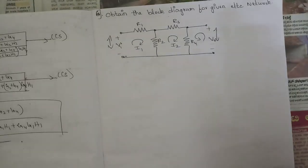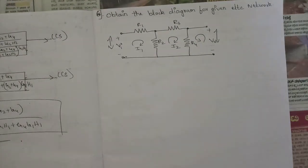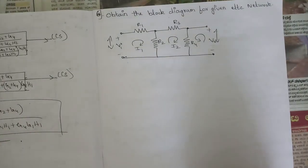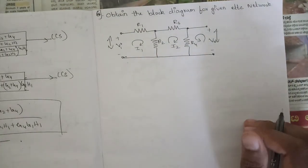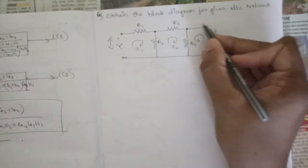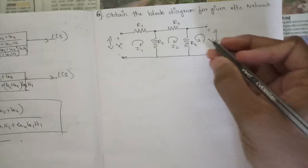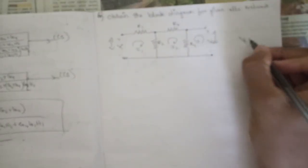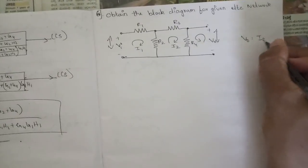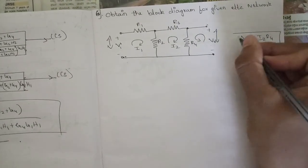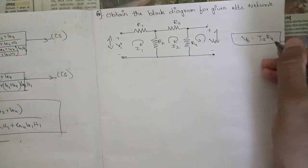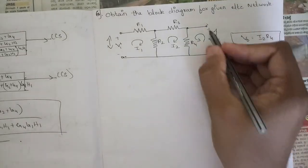As you have studied in network analysis, first we have these two loops. We need to write the KVL equations. In this outer loop, V_out is equal to I2·R4 — the current through R4 resistor is I2. Write that and keep it.